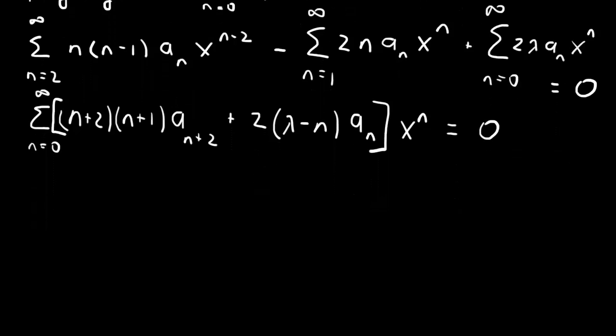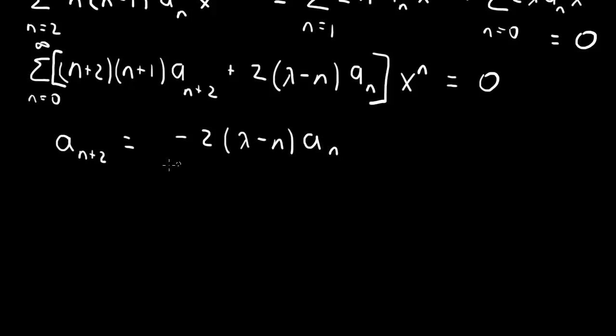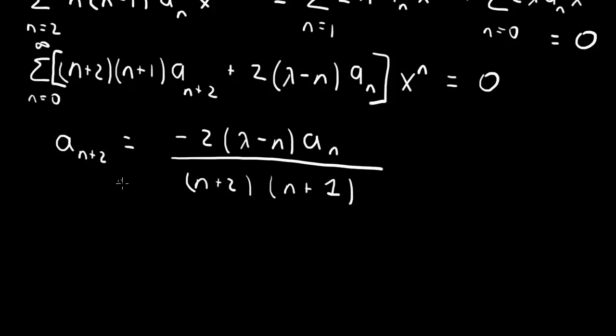Now we have a single power series, so we set each coefficient to 0. This gives us a recursion relation. Solving for aₙ₊₂: we get aₙ₊₂ = -2(λ - n)aₙ / [(n+2)(n+1)]. That is our recursion relation.